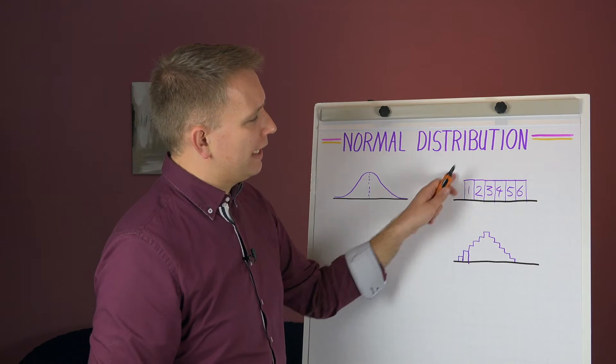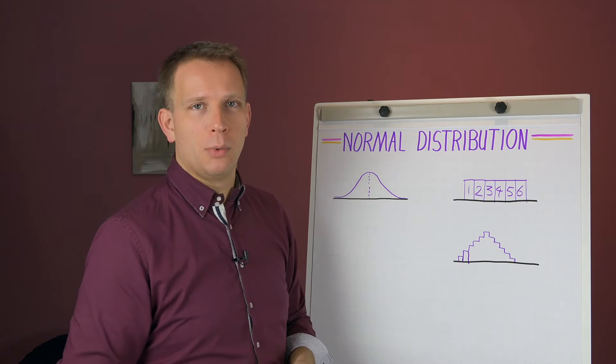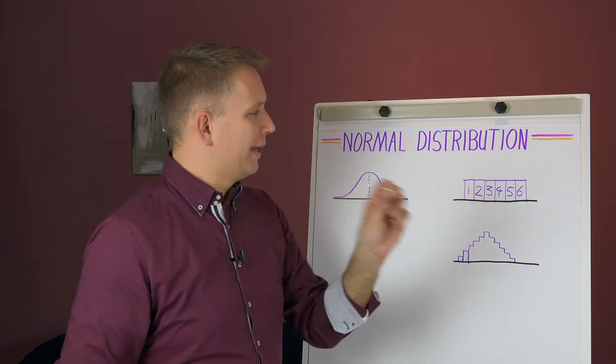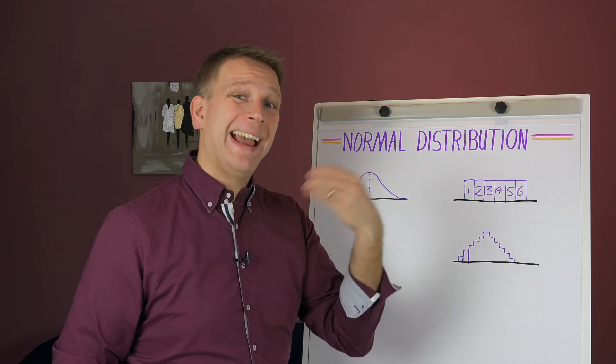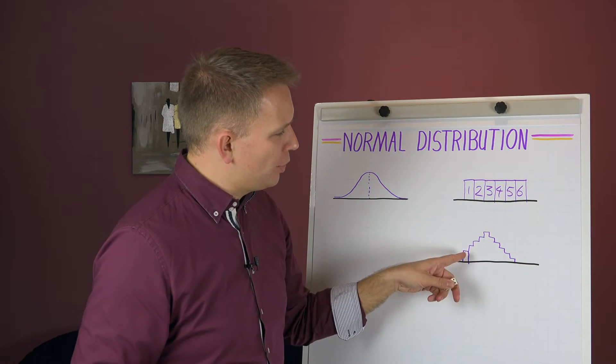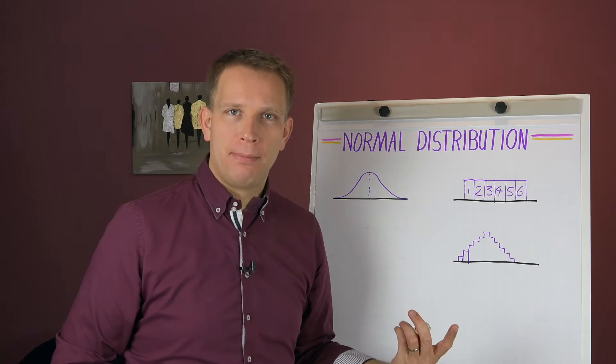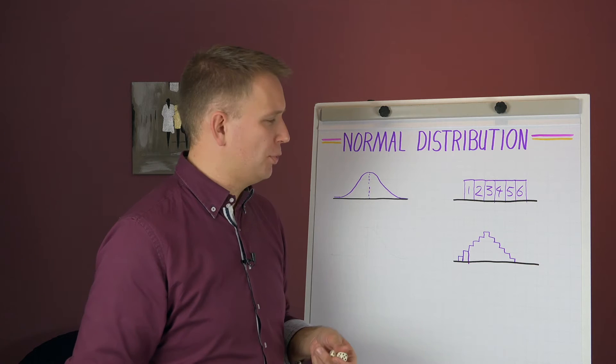But you see that even though one single die has a uniform distribution, if we take two and we add them together, the distribution also changes shape. So it becomes a different type of distribution.